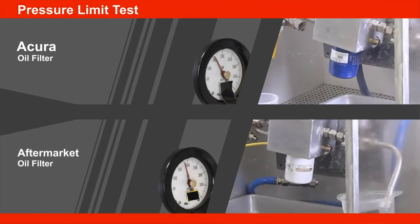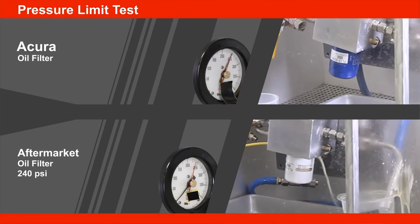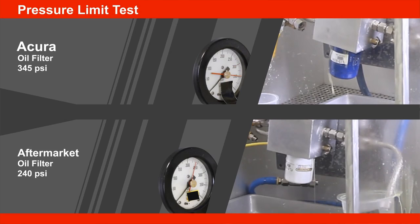The pressure limit is the amount of pressure the oil filter can handle before it begins to leak. The aftermarket oil filters tested ranged from 66 percent to 100 percent of the genuine oil filter pressure limit. No one could handle greater pressure than the Acura Genuine oil filter.